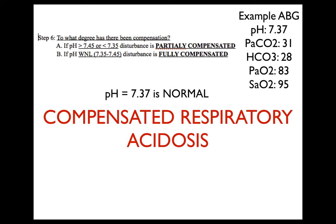Step six: to what degree has there been compensation? If the pH is greater than 7.45 or less than 7.35, the disturbance is partially compensated. If the pH is within normal limits between 7.35 and 7.45, the disturbance is fully compensated. Our pH is 7.37, which is normal. This means we have a compensated respiratory acidosis.